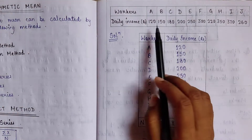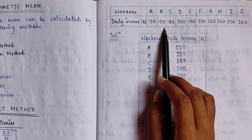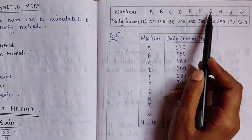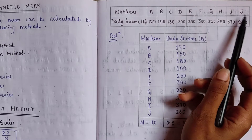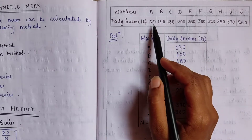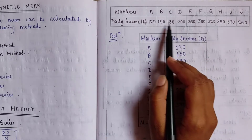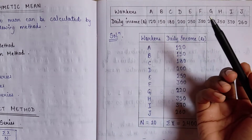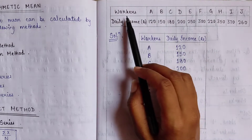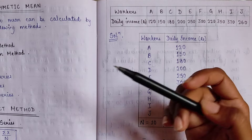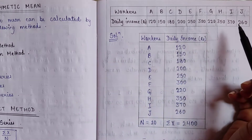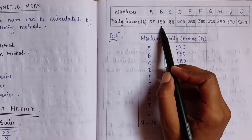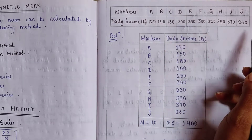The question gives 10 workers — A through J — with their daily incomes: worker A is 120, B is 150, C is 180, and so on. This is individual series data.